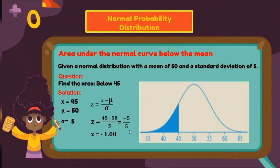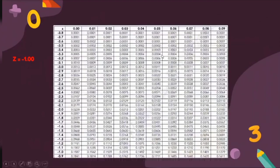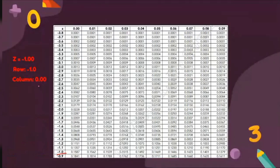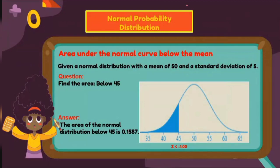Next, use the z-table to get the area for z equals negative 1.00 — that is, to the left of negative 1.00. The value of our row is negative 1.0 and the column is 0.00. Getting the intersection between negative 1.00 and 0.00 using the z-table gives 0.1587. So the area of the normal distribution below 45 is equal to 0.1587.